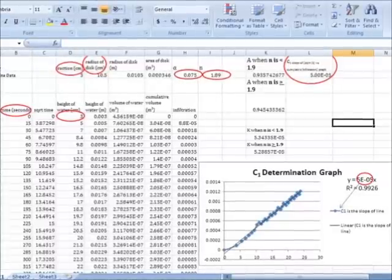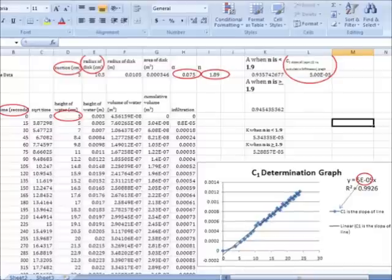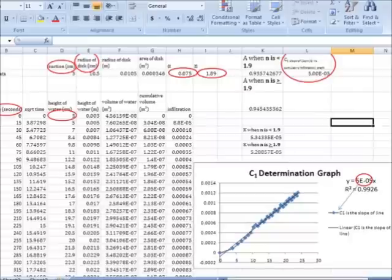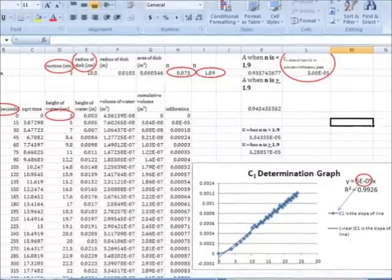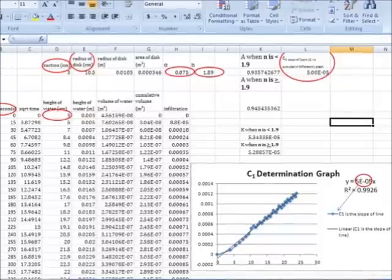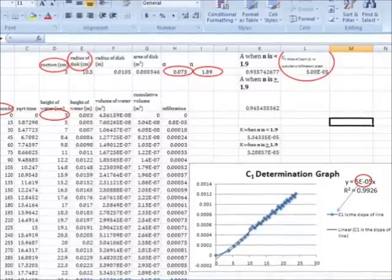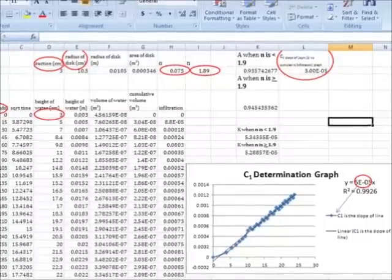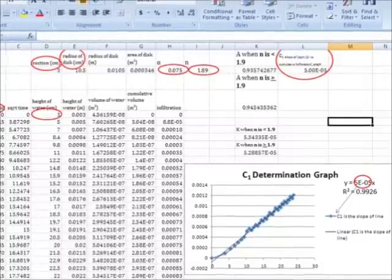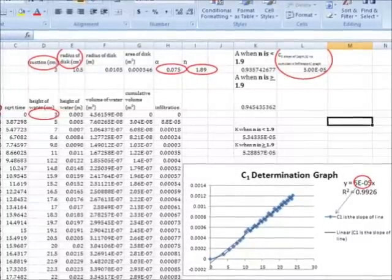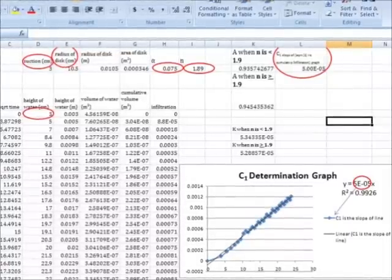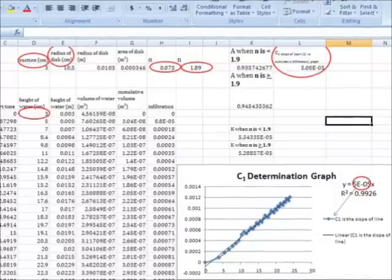If one chooses to create a new spreadsheet, the Van-Genuchten parameterization equations and the infiltration rate equation, which all can be seen on the datasheet, must be inputted in order to arrive at C1 and A. Where A is a value relating the Van-Genuchten parameters to suction rate and disk radius, and where C1 is a parameter related to hydraulic conductivity.